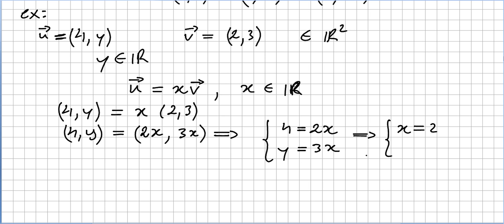So y will be 3 times 2, right? So x will be 2 and y will be 6. So if x is 2 and y is 6, the vector u can be written as a linear combination of the vector v.